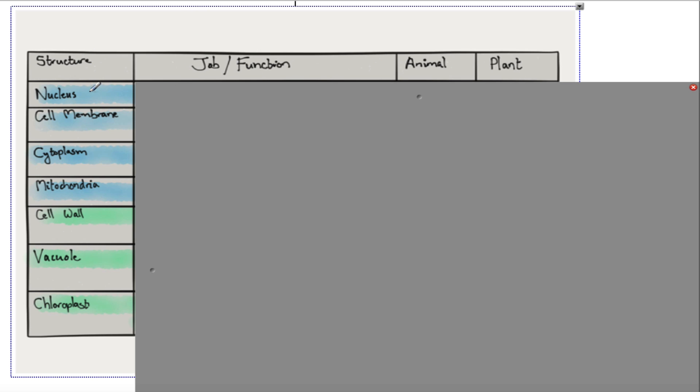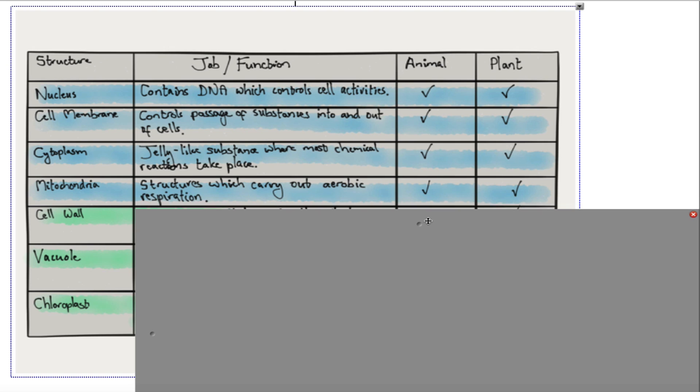So you're going to list the structures down the left-hand column. And in the next column you're going to put what is the job or function of that part. And what I've done is just put a tick across in place to say whether they have that feature or not.